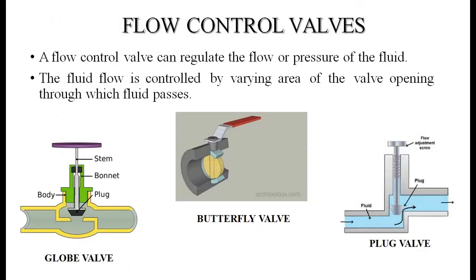A flow control valve regulates the flow or pressure of the fluid by varying the area of the valve opening through which fluid passes. Examples include globe valves, butterfly valves, and plug valves. For the butterfly valve, changing the handle position maximizes or minimizes the opening. For the globe valve, rotating the hand wheel moves the plug up or down to open or close the orifice. The plug valve similarly uses a flow adjustment screw to control the passage.